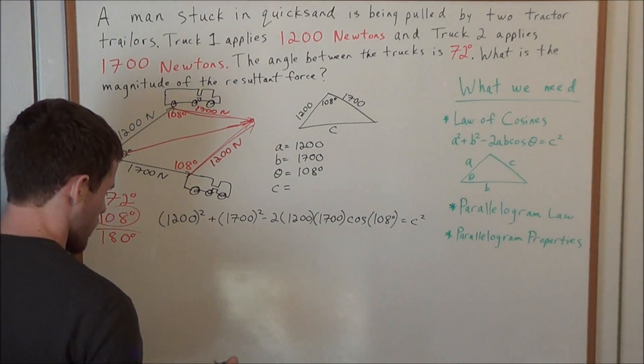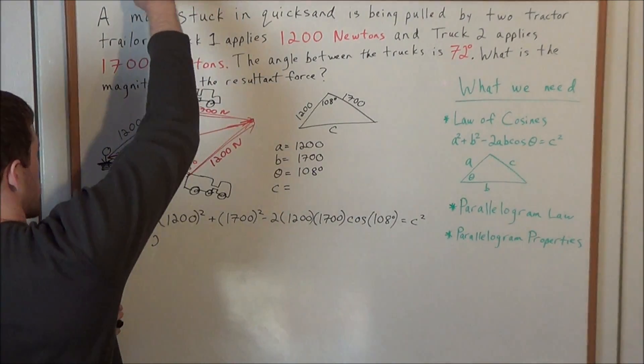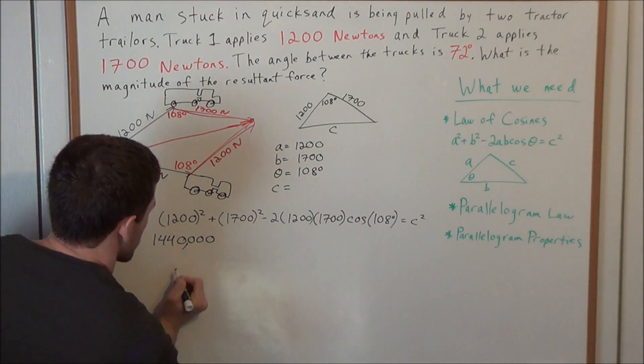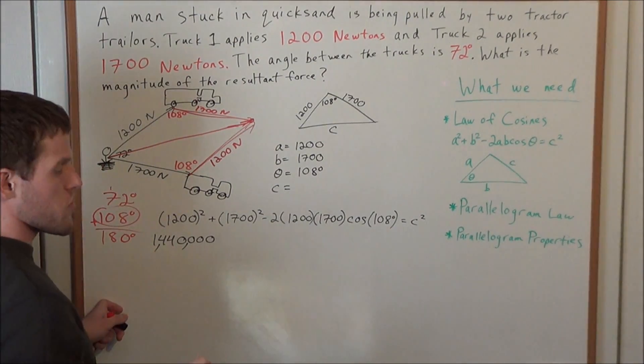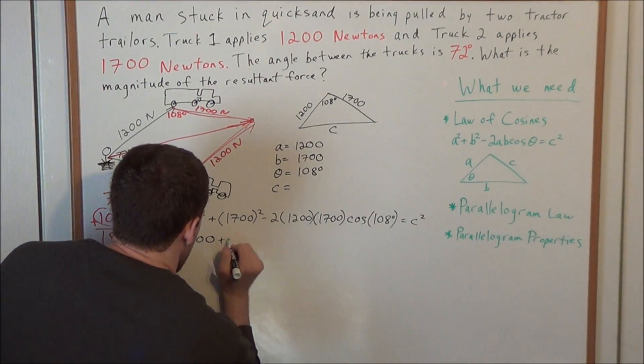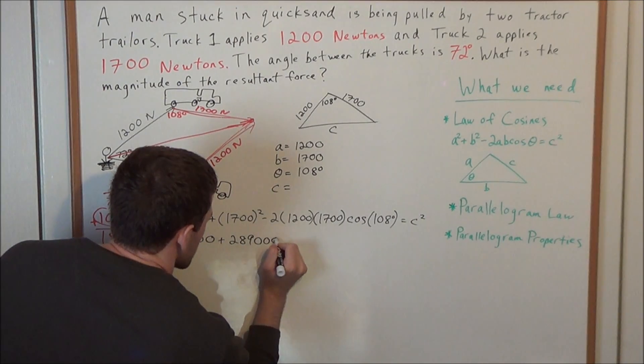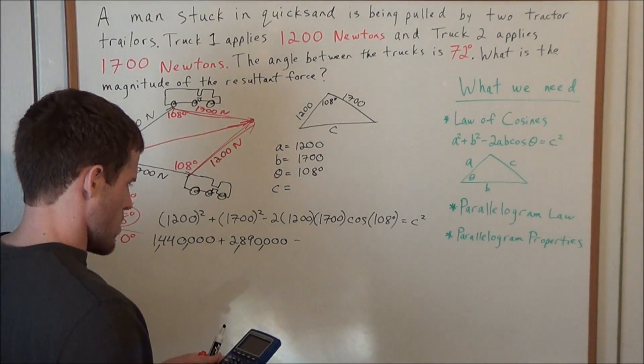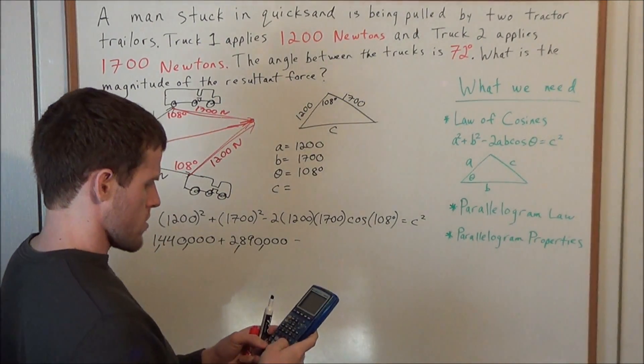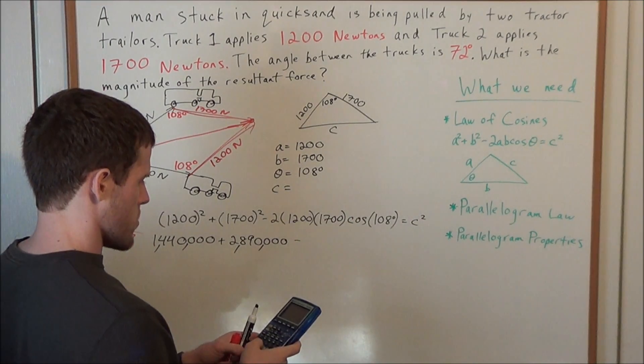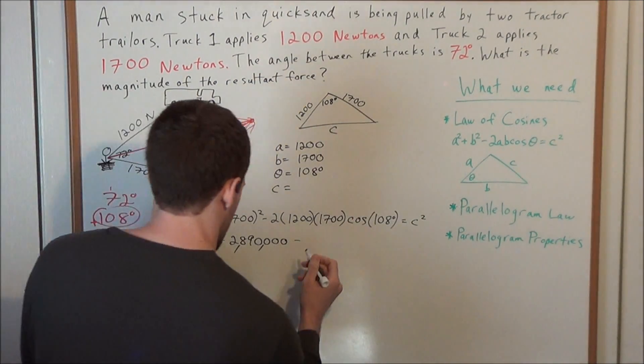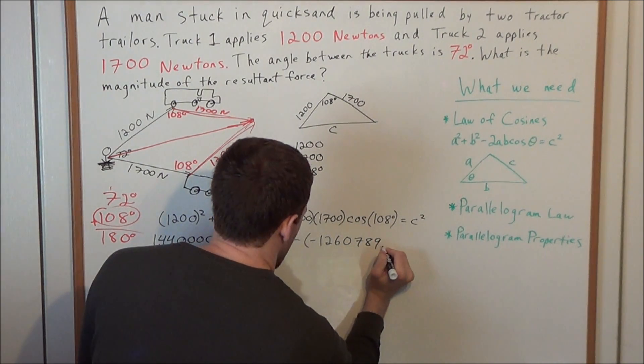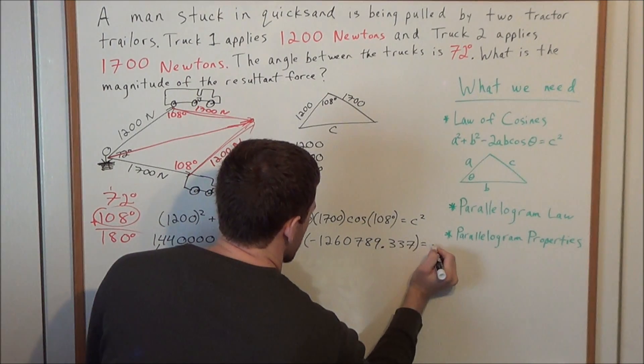So now let's simplify this. We have 1200 squared is 144 with four zeros. Later on we are going to need a calculator to find cosines of 108 degrees and to add everything together, we don't want to do this by hand. And we have 289 and four zeros, and now for this part I am going to use a calculator. We have 2 times 1200 times 1700 cosine of 108 degrees. This is going to give us negative 1260789.337, and this equals C squared.